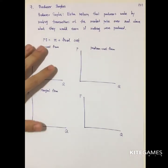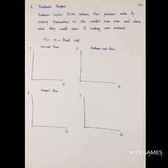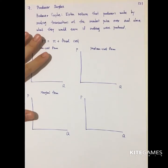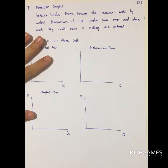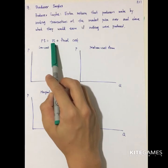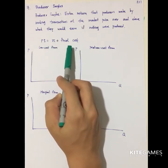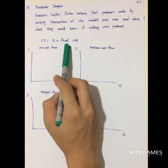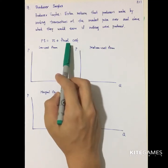We will now talk about producer surplus, followed by welfare analysis. Producer surplus is defined as the extra return that the producer makes by transacting at the market price, over and above what they would earn if nothing were produced. In the short run, this is the area above the supply curve and below the price, and it equals profit plus fixed cost. But in the long run, profit is zero and there are no fixed costs since all factors are variable. So what is the concept of producer surplus in the long run?